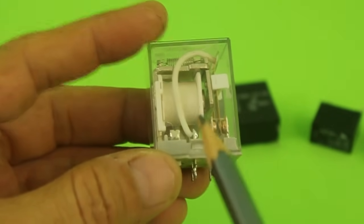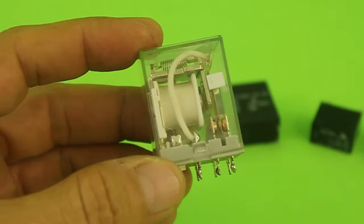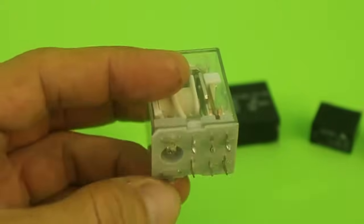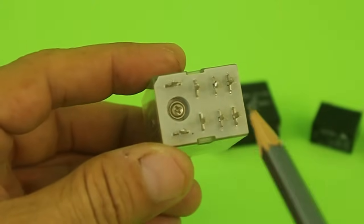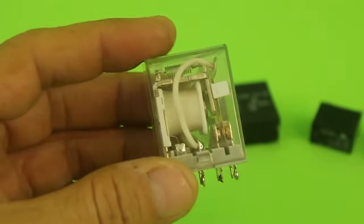Every relay has a coil, the white one, which when energized activates the contacts. So, of all the pins of the relay, two of them correspond to the coil and the coil has a resistance.